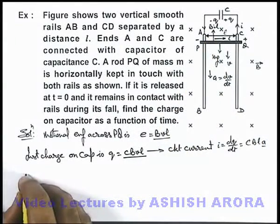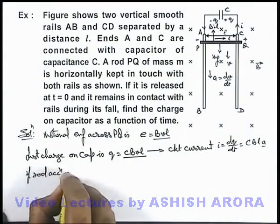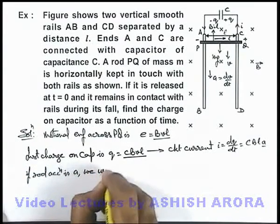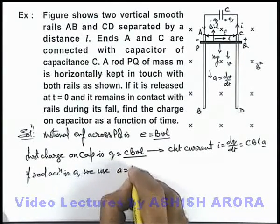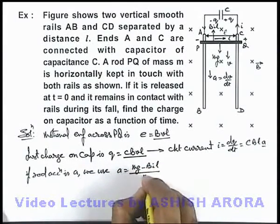So here we can write, if rod acceleration is a, we can directly use acceleration as mg minus Bil divided by its mass.